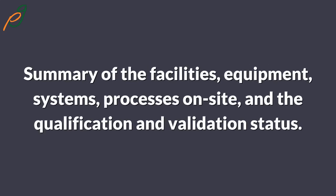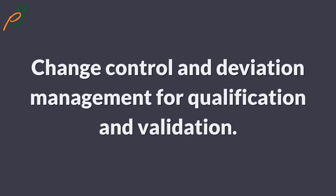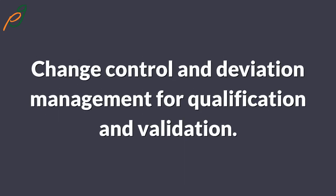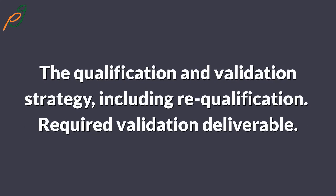The VMP must also include: the organizational structure including roles and responsibilities for conducting qualification and validation; a summary of the facilities, equipment, systems, and processes on site and their qualification and validation status; compliance requirements for validation including how the validated state will be maintained and a schedule of validation activities; change control and deviation management for qualification and validation; guidance on developing acceptance criteria; references to existing documents; the qualification and validation strategy including re-qualification; and required validation deliverables.